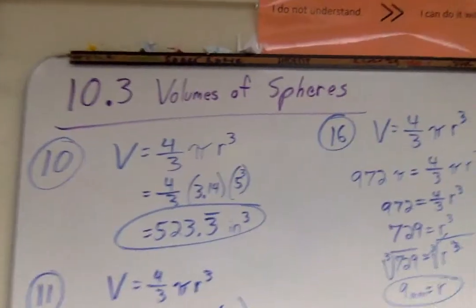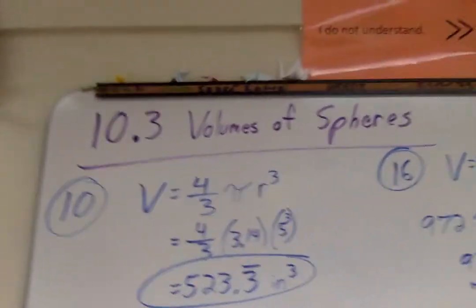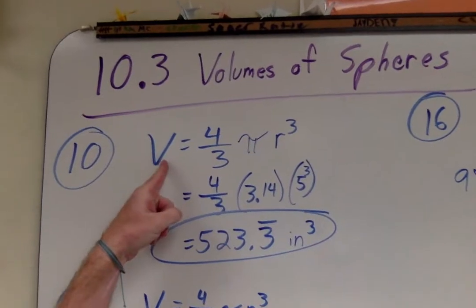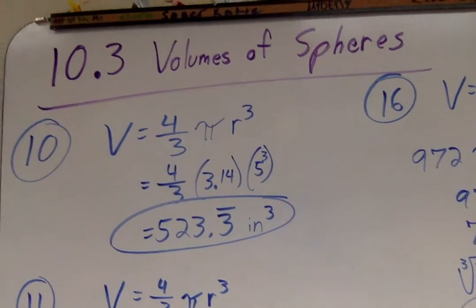10.3, Volumes of Spheres! Look at that beautiful poetry! It's almost as beautiful as my lovely hairdo! Thank you, Justin Bieber! Alright! So, first thing I do is I write down my formula! The volume of a sphere is 4 thirds times pi times the radius cubed! Okay!